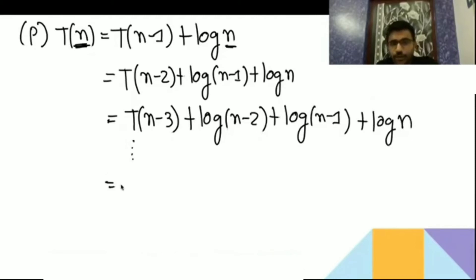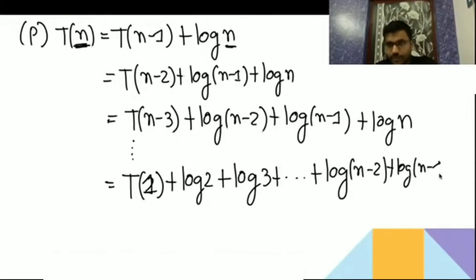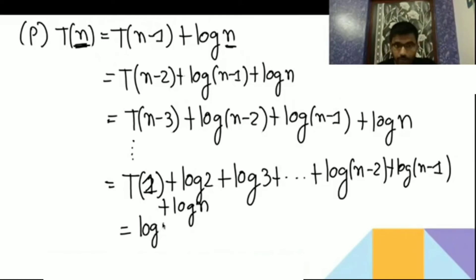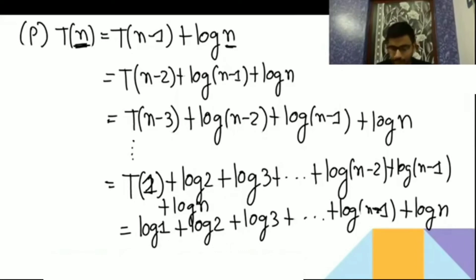It keeps on decreasing. n-2 is greater than n-3. So when we reach T(1), we get log 2 + log 3 + ... + log(n-2) + log(n-1) + log n. T(1) = 1, which can also be written as log(1) = 1. So we have log 1 + log 2 + log 3 + ... + log(n-1) + log n.